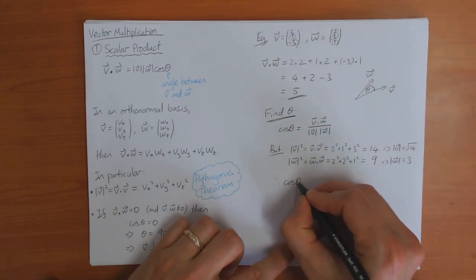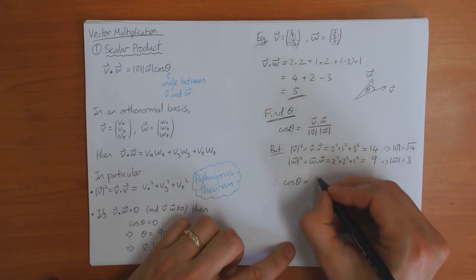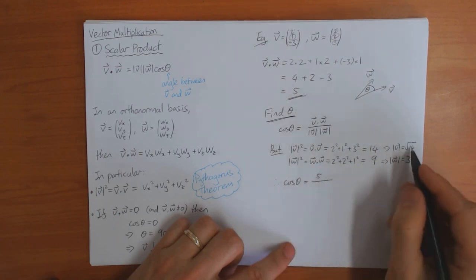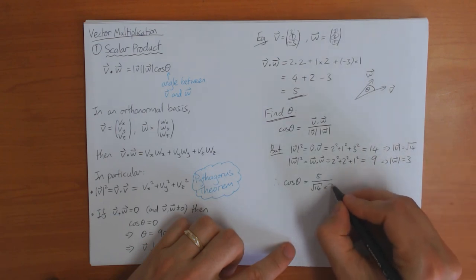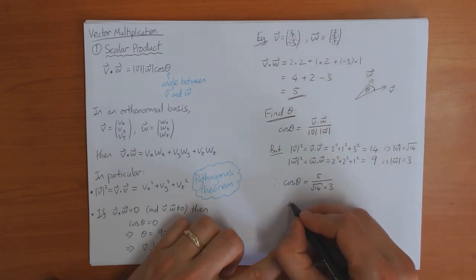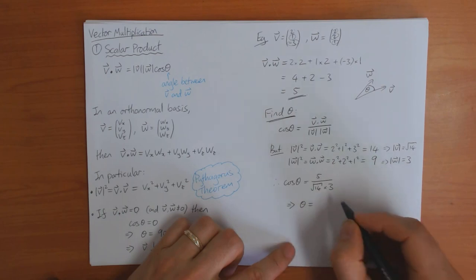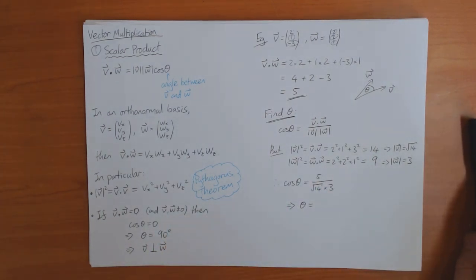So therefore cos theta is v dot w, which is five divided by length of v is square root of fourteen times w, which is three. And then to work out what theta is, we need to have a calculator.